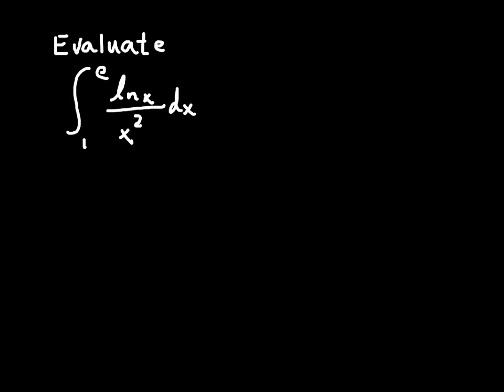If it was just the natural log of x over x, then we could use u-substitution, but because the x is squared in the denominator, u-substitution isn't an option. So we have to go with integration by parts.